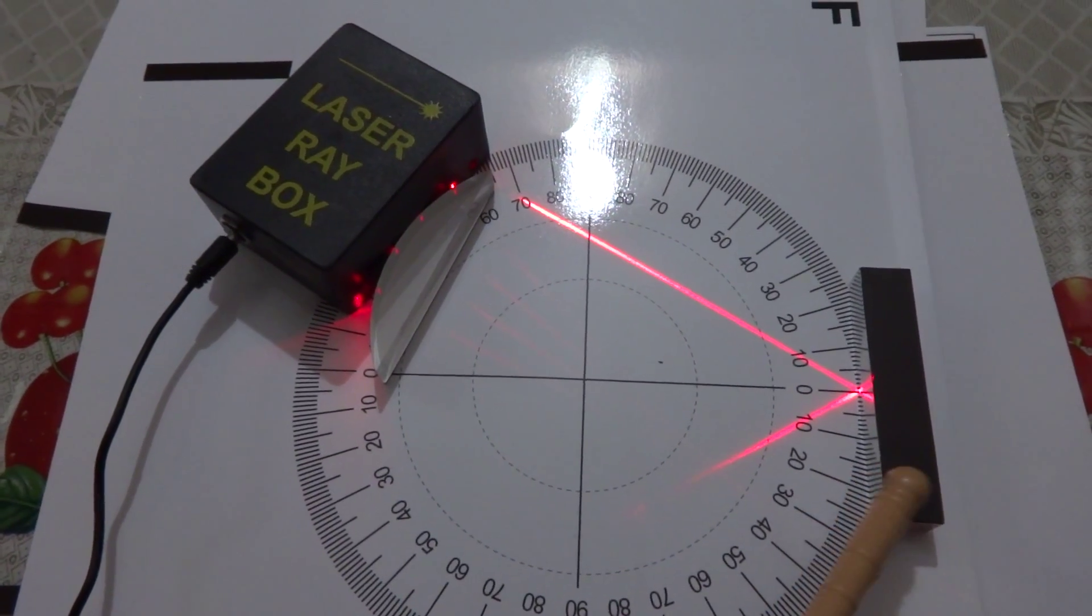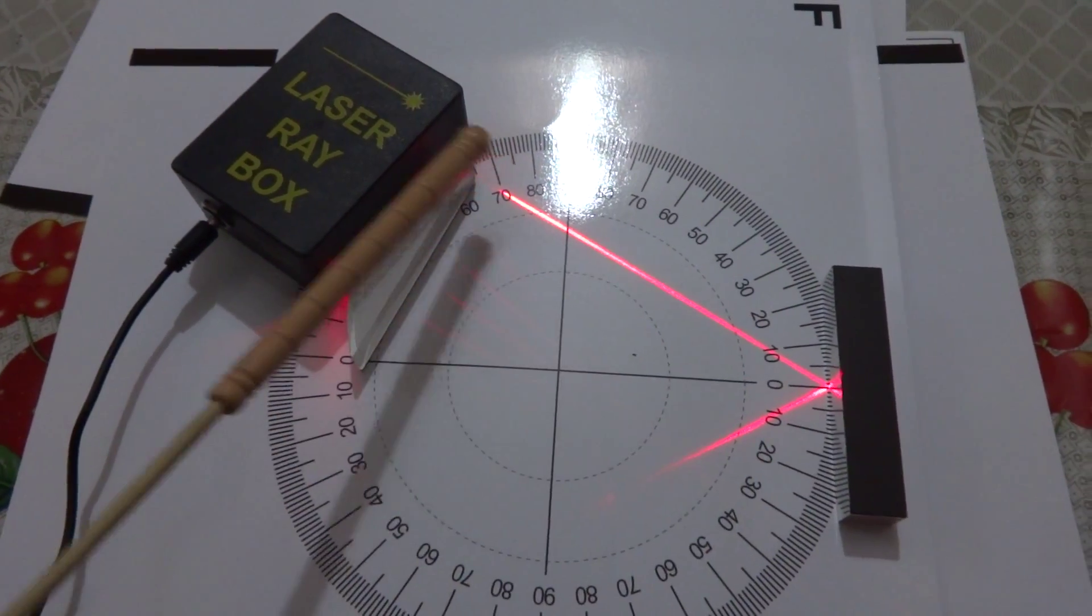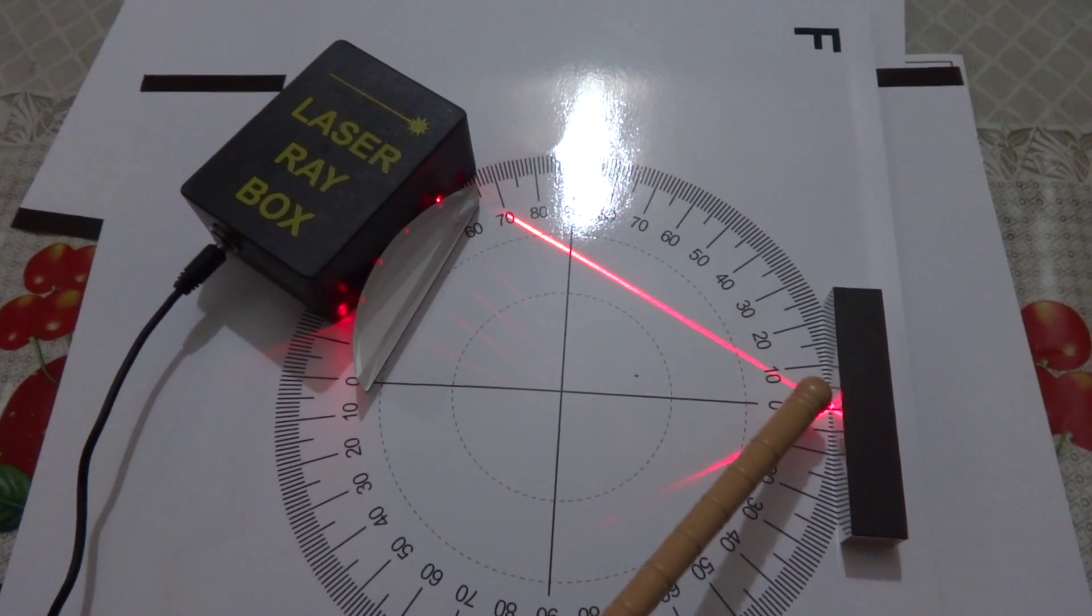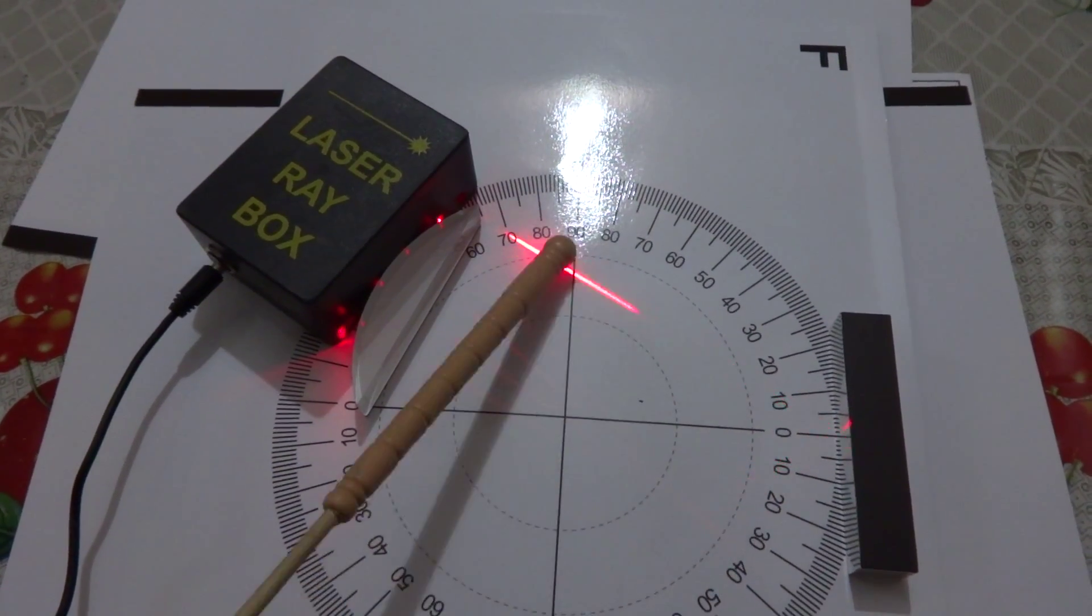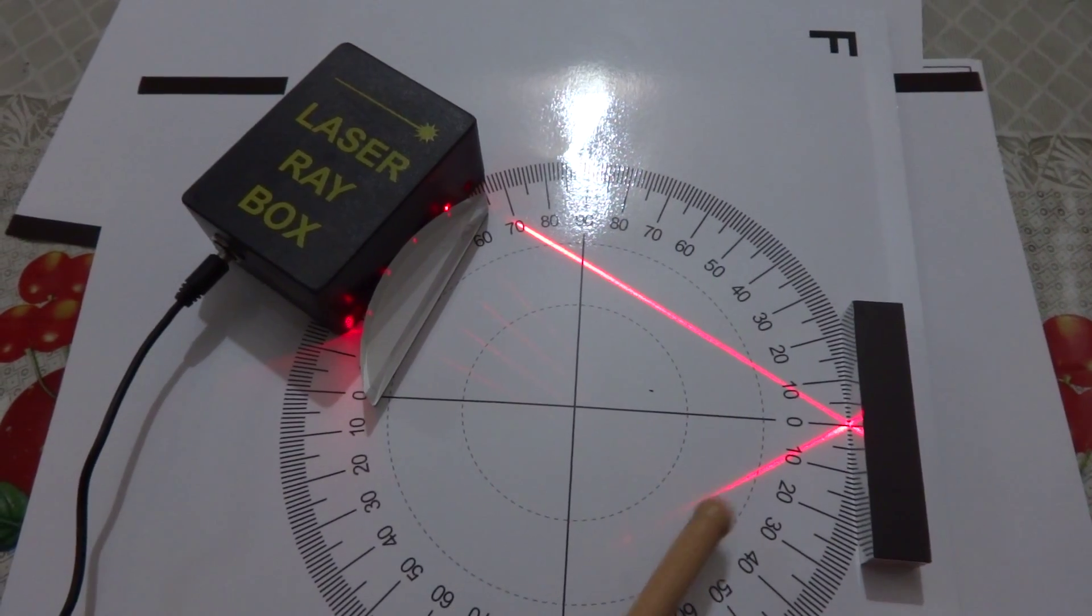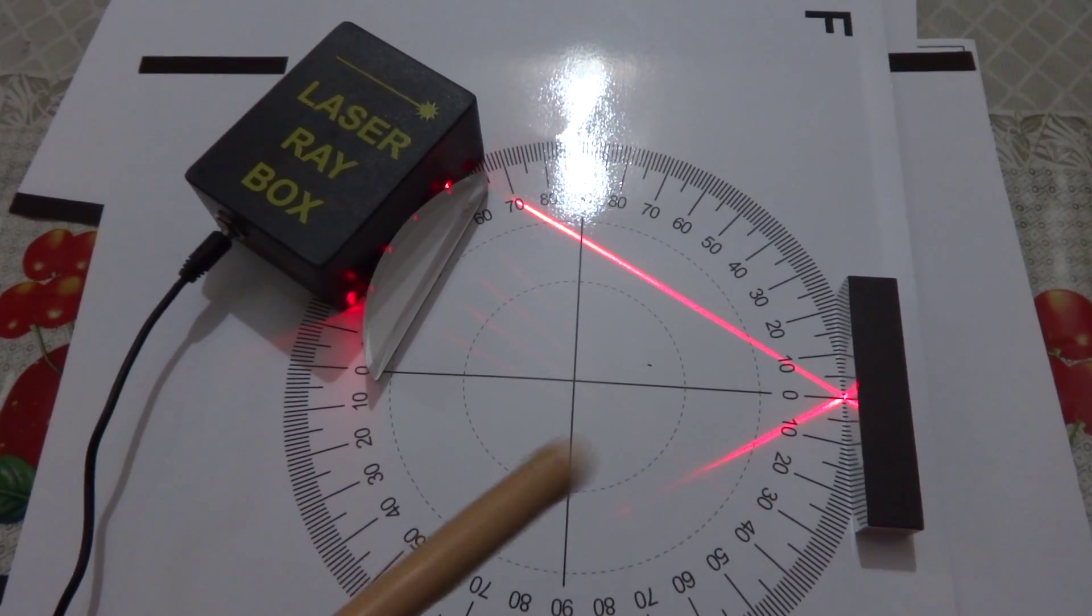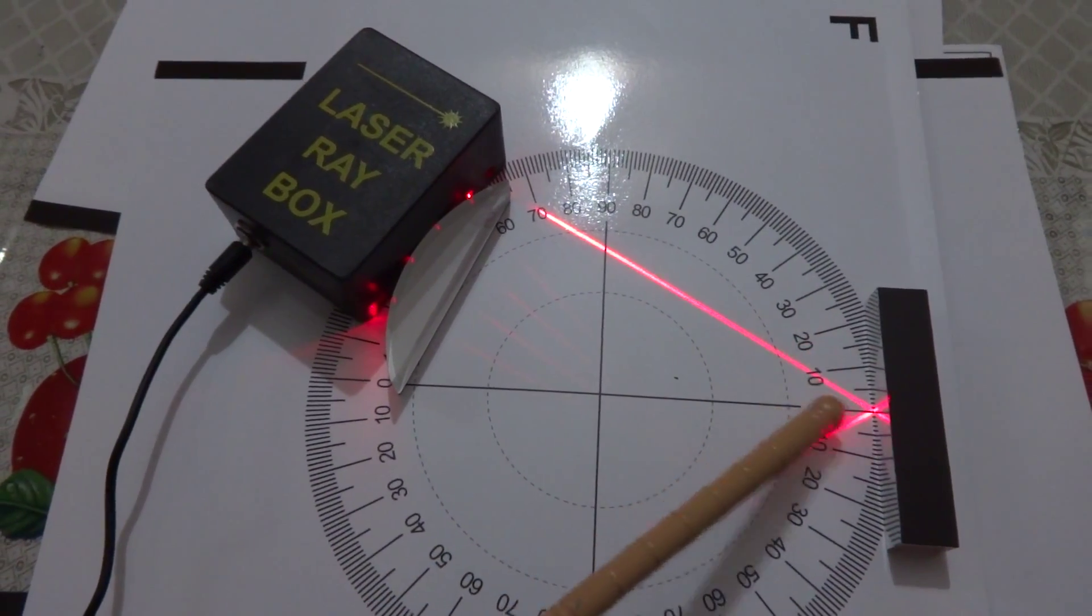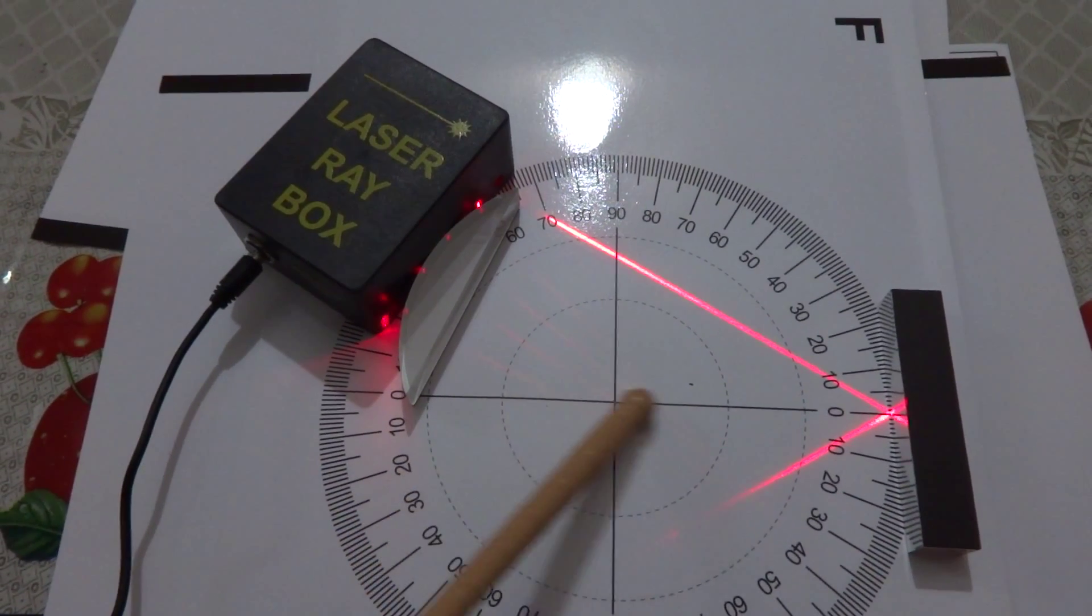This is the plane mirror. You can see a laser ray is focused onto it, and then this is the incident ray and this is reflected ray. You can observe very well the angle between the normal. This is the normal.